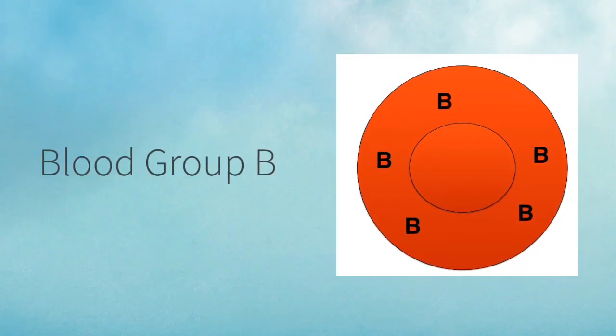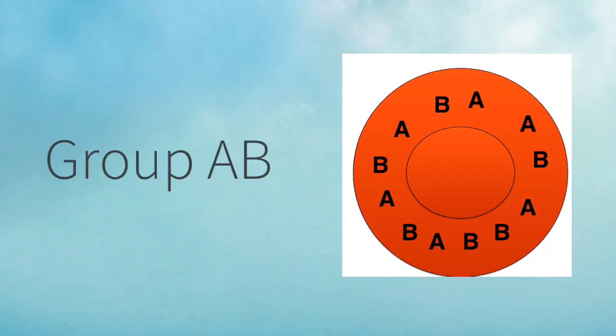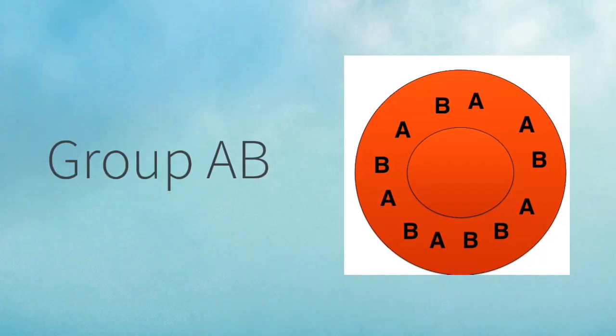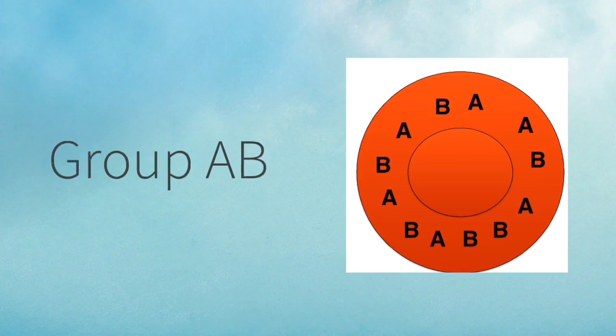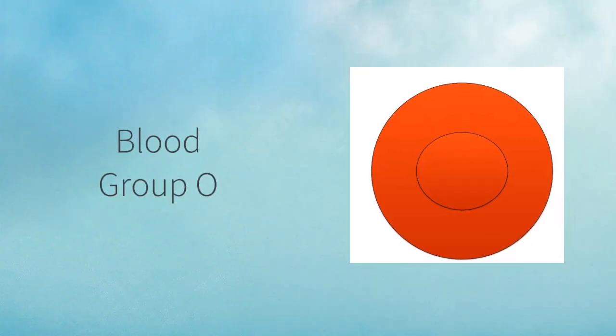Blood group B means that you have B antigens on the surface of your red blood cells. Blood group AB means that you have both A and B antigens on the surface of your red blood cells. And finally, if you're blood group O, it means zero, you have no antigens on the surface of your red blood cells.